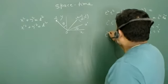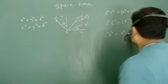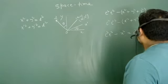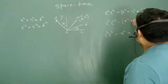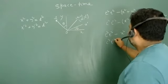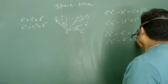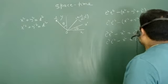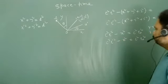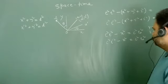So we can write c²t² - x² = c²τ₀², and similarly c²t-dash² - x-dash² = c²τ₀² as well, since y = y-dash and z = z-dash.